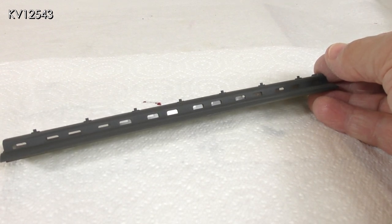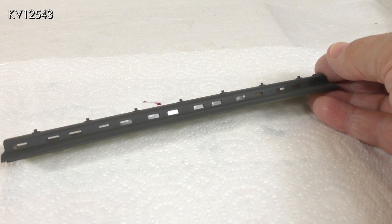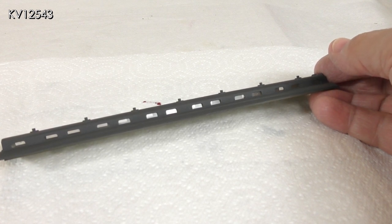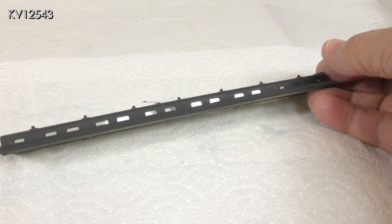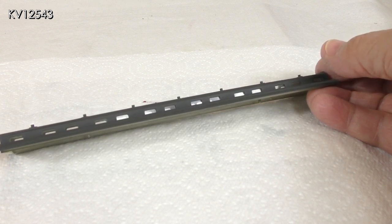The glazing was cut from the packaging of a Ratio signal kit, and has been glued in place with Deluxe Materials Glue and Glaze.